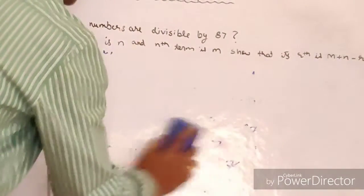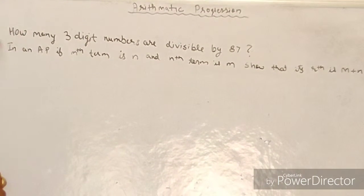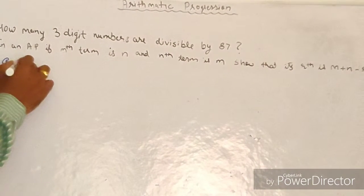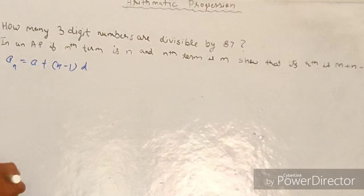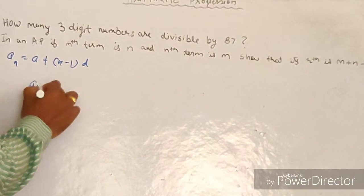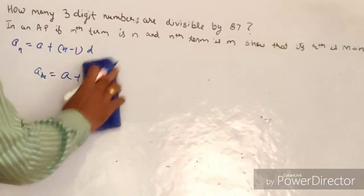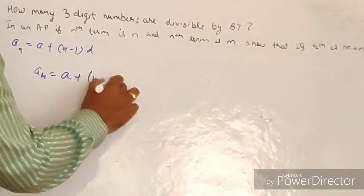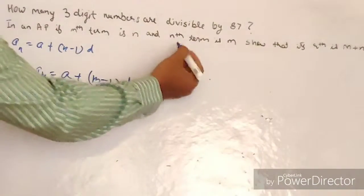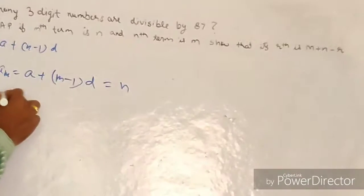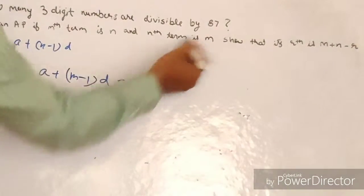For the second question, don't get confused by the notation — it's just the general form of representation. We know that a(n) = a + (n − 1)d. The question states that the mth term equals n, so: a + (m − 1)d = n. And the nth term equals m, so: a + (n − 1)d = m.